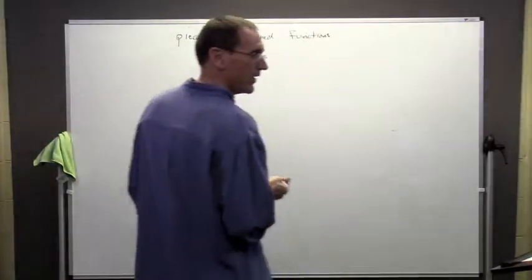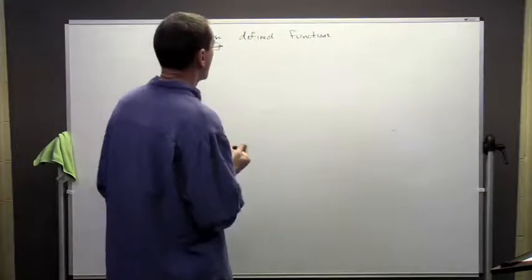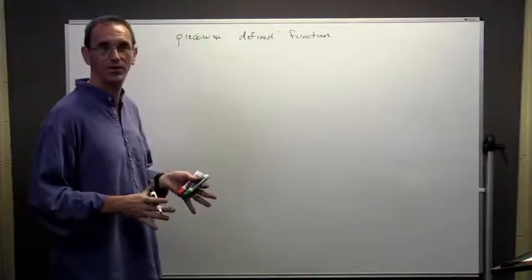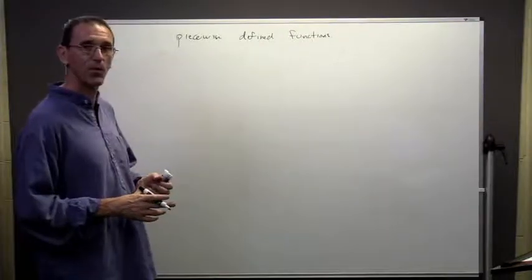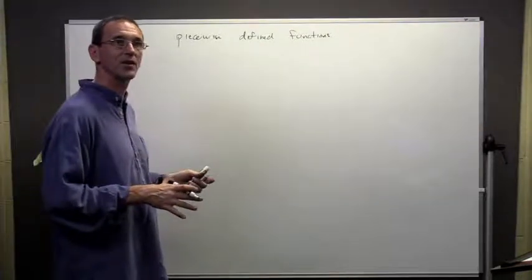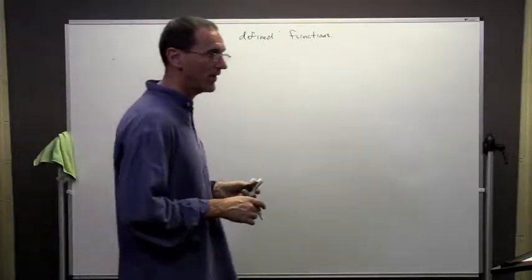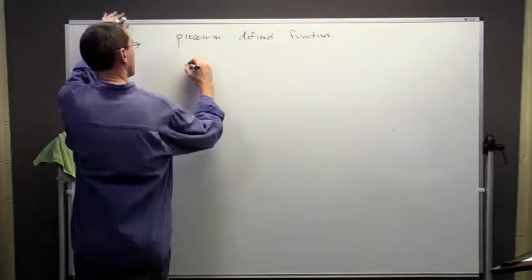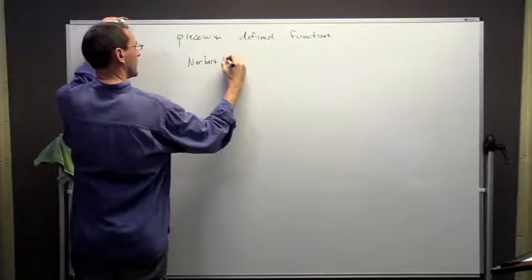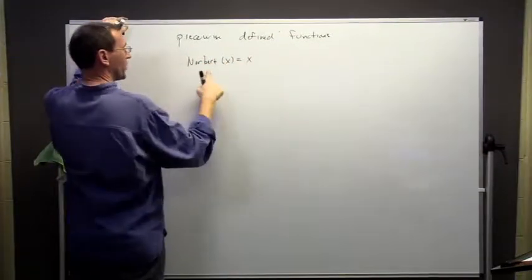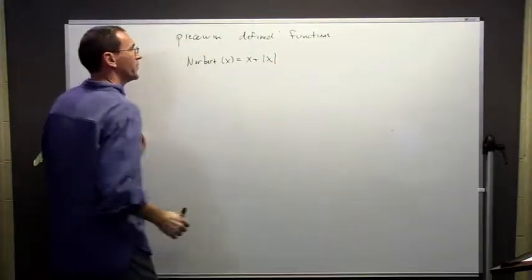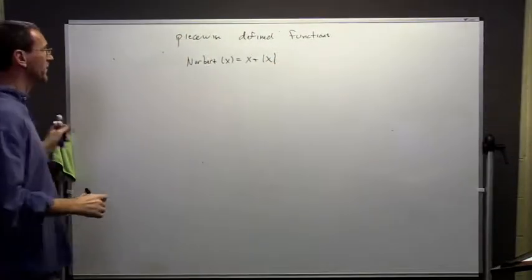I'm going to look at a couple of examples, and basically this is mostly just about notation. We've seen some of these ideas before, but we're going to formalize some notation here to look at this in a different way. So let's define a new function — we're going to call it Norbert — and Norbert is x plus the absolute value of x.